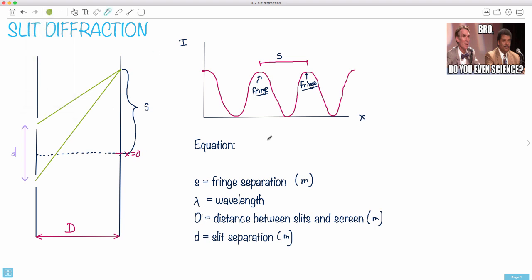We have a formula for this which is really nice. It goes s equals λD over d. I like this version because it puts this together really nicely. You can figure out what your fringe separation is depending on your wavelength, the distance, and your slit separation.